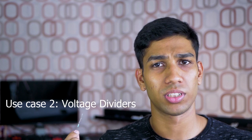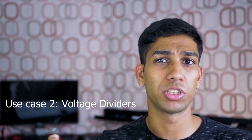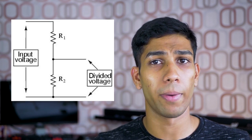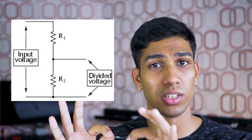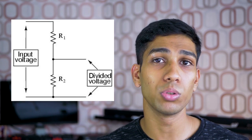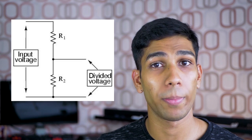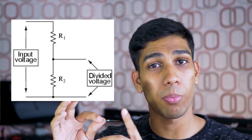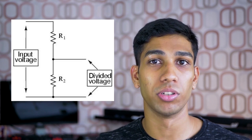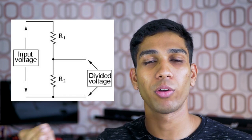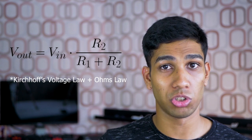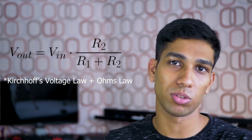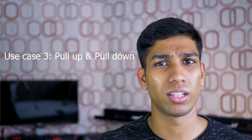We can also use resistors as voltage dividers. By wiring two resistors in series, we can induce a voltage drop at the middle point where the two resistors meet. We can calculate this voltage drop using Ohm's law.